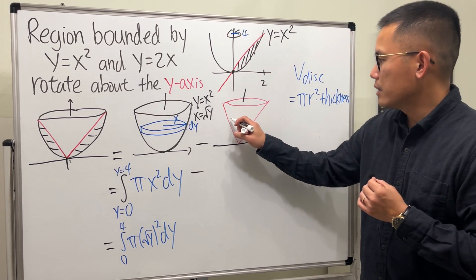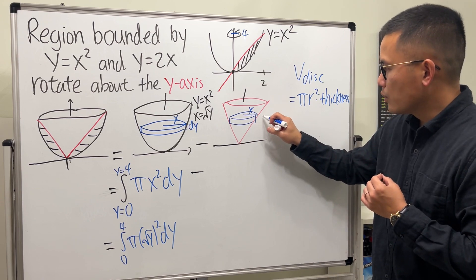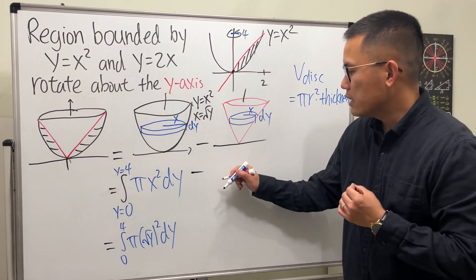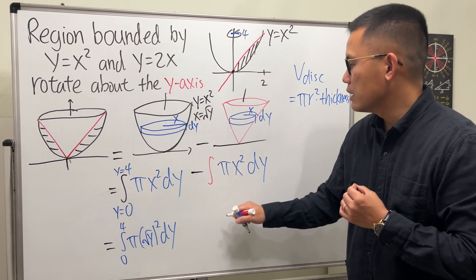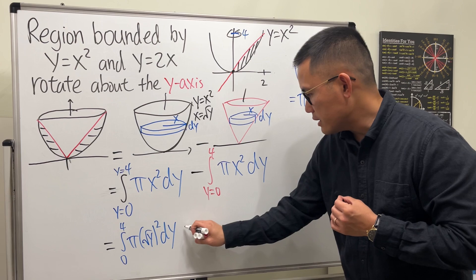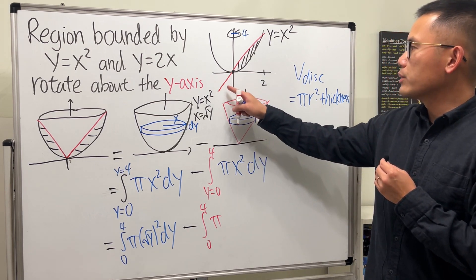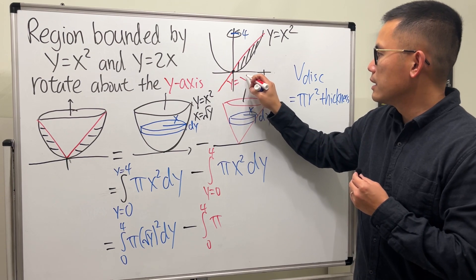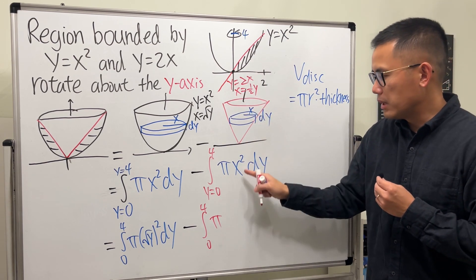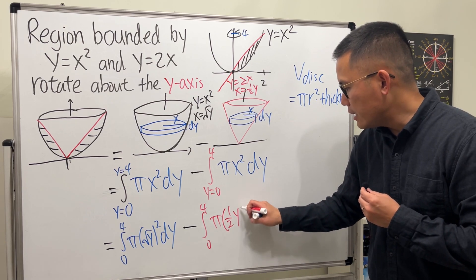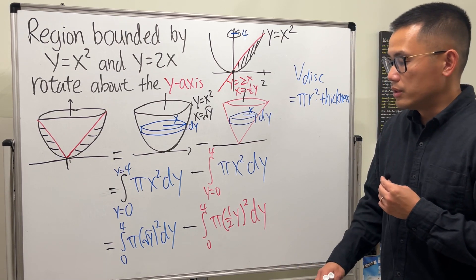For the second part, we subtract the inner disk. The radius for the inner cone comes from y equals 2x, so dividing both sides by 2 gives x equals one-half y. We integrate from 0 to 4, subtracting the integral of pi times (one-half y) squared dy. Then you can just go ahead and compute it.